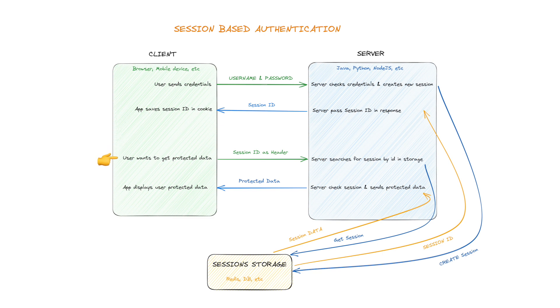This allows the client to be identified by the server in subsequent requests. When the user wants to access their profile page, the client includes the session ID in the request header. The server searches for the session using the ID in the session storage, and if successful, checks the session and sends back protected data. It works, but there's a bottleneck in this approach — every request requires a lookup in session storage, which can affect performance.